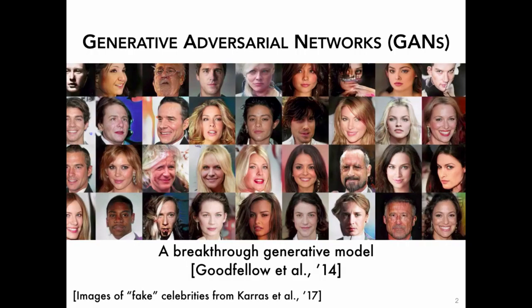GANs, or Generative Adversarial Networks, are a breakthrough class of generative models introduced a couple of years ago. They have been able to learn an underlying distribution over complex data like images of celebrities and produce realistic samples. While a lot of empirical work has gone into making GANs work well on a variety of applications, there is very little or no theoretical understanding of why they work well.